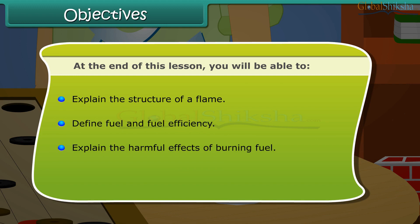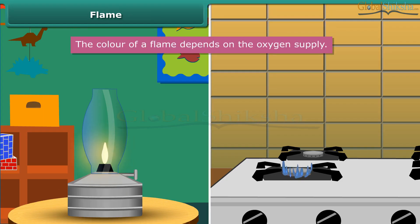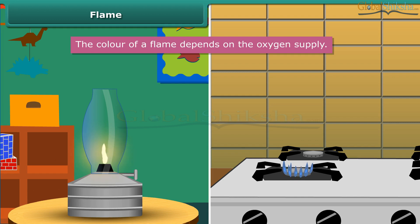When we look at a flame of a kerosene lamp, it is yellow in color, but the flame of a kitchen stove is blue. The color of a flame depends on the oxygen supply. If the oxygen supply is less, the flame will appear yellow due to incomplete combustion of fuel. And if it is more, the flame will appear blue due to complete combustion of fuel.